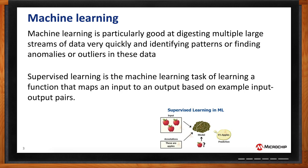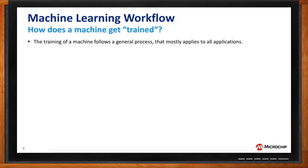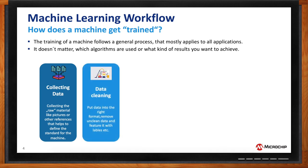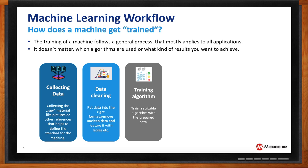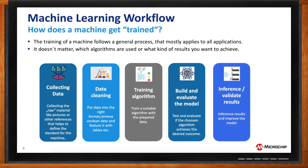The ML workflow is a key point because it's a little different from writing standard rules-based algorithms. First, you collect data from a sensor — capturing vibration, images, sound, things like that. Then you go to data cleaning, where you label and prepare the data to teach the model. Then you move to the training step, and once you have a trained model you evaluate it with new data. When you're happy with that, you move to implementation in the chip to run in your application. Those are the five main steps of any ML workflow.